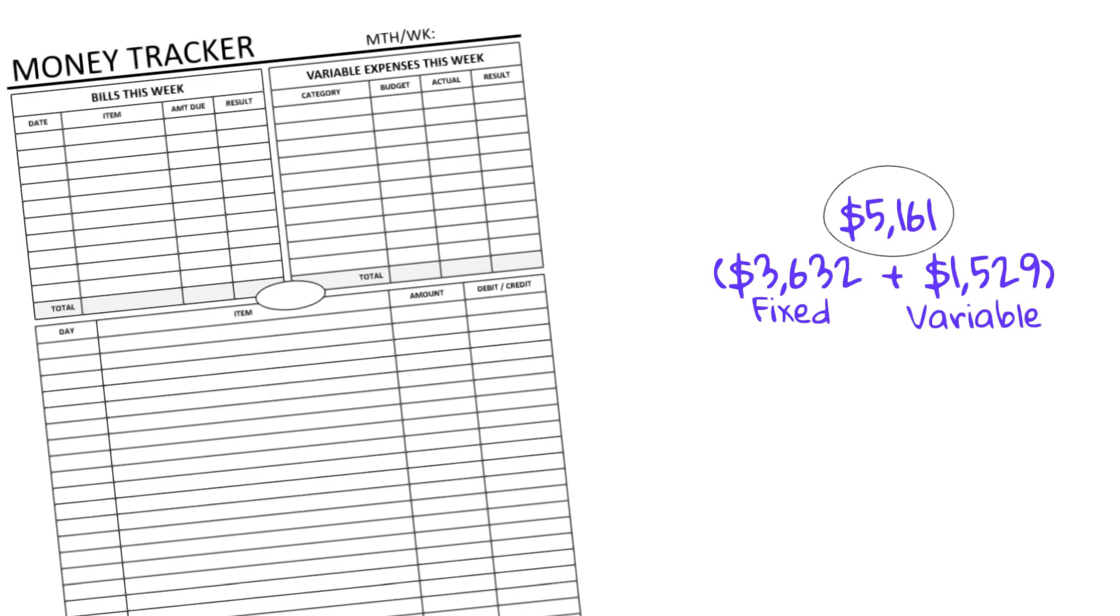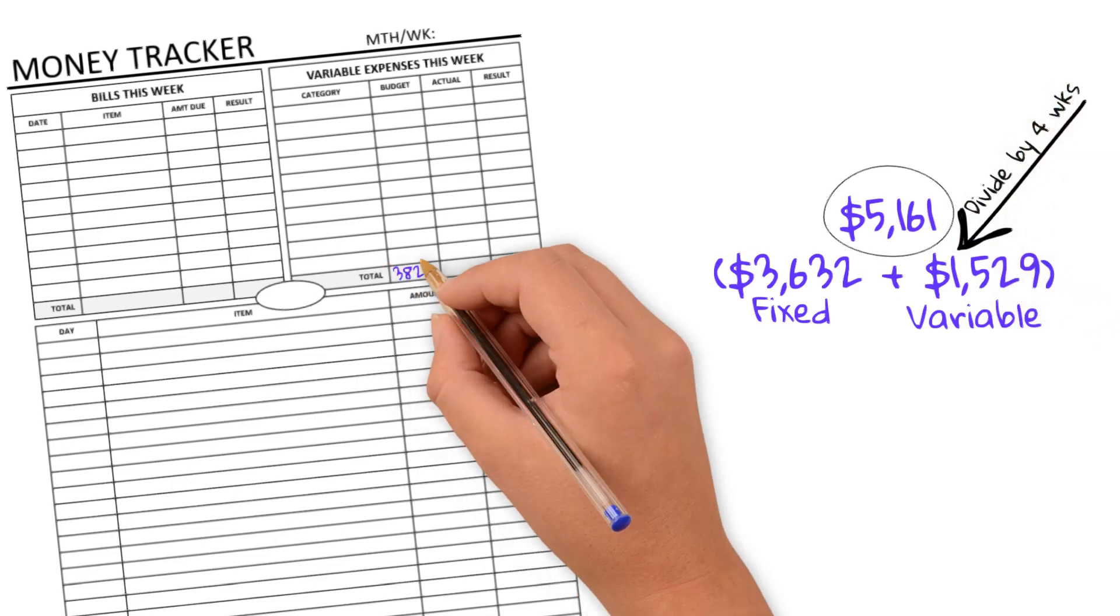I divide the $1,529 by four. This is what I can spend each week. And that comes to $382.25.